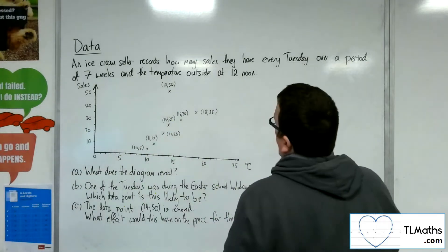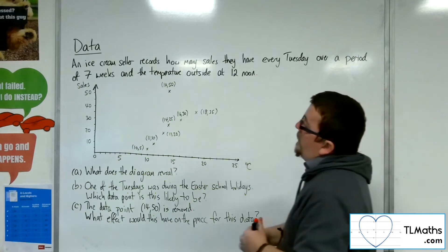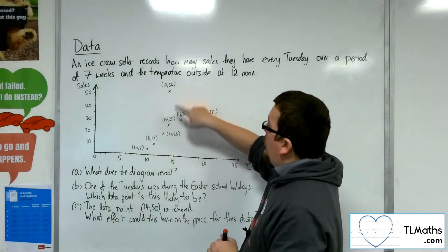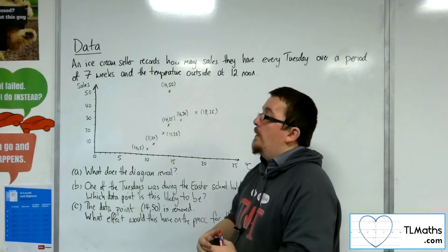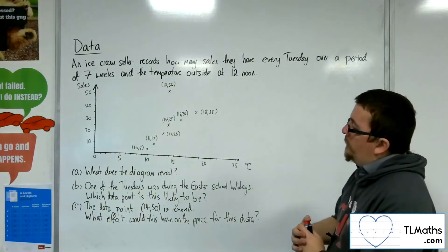There does appear to be an outlier here, or what appears to be an outlier, where it was 14 degrees centigrade, but there were 50 sales, okay, which doesn't match the rest of the data.